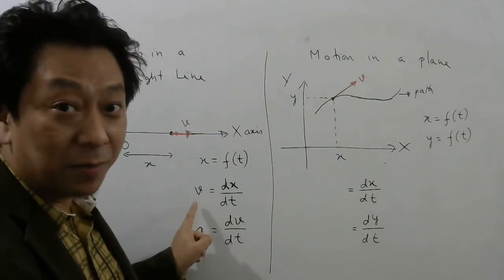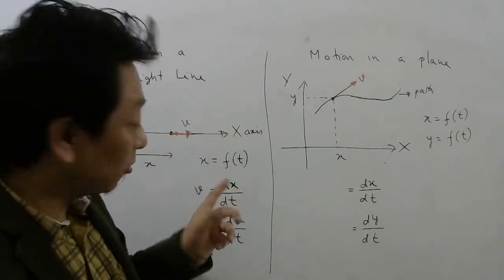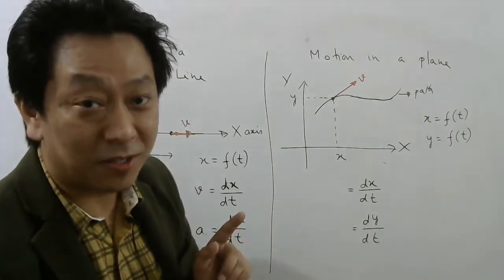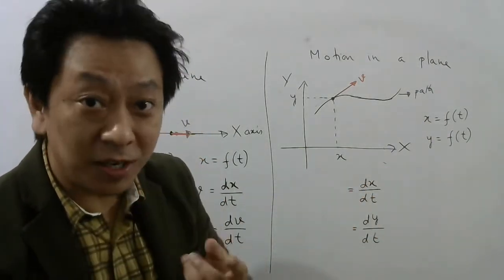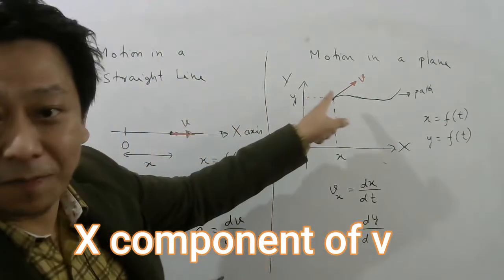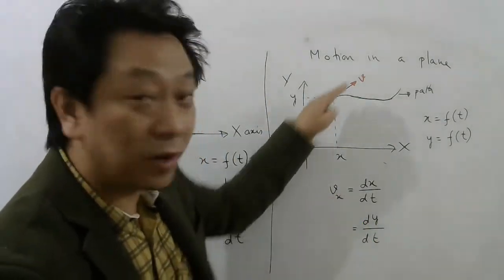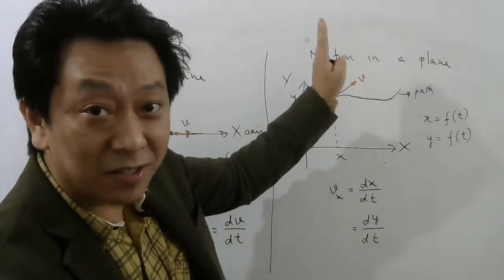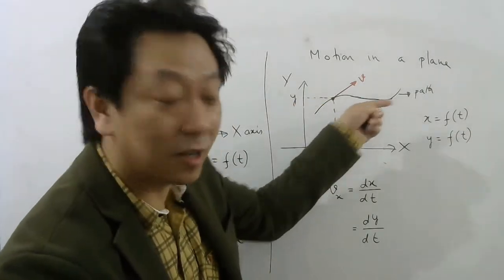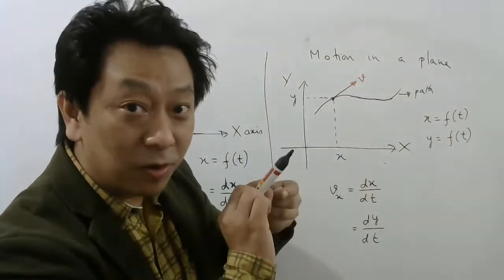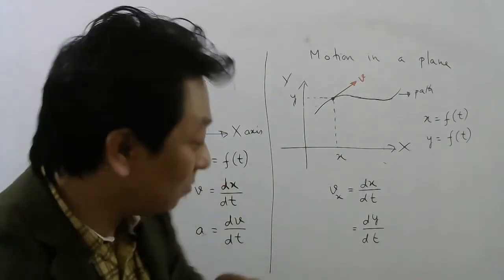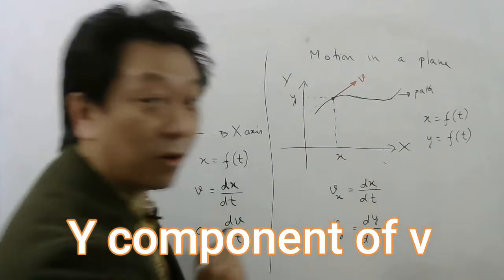Now, dx/dt is velocity along the x-axis when only the x-coordinate changes. But in motion in a plane, the x-coordinate also changes and the y-coordinate also changes. So what is dx/dt? It is only the x-component of the velocity. Similarly, dy/dt — is it the actual velocity? No, dy/dt is the y-component of velocity. Just like dx/dt is velocity along x-axis, this is not the actual velocity. The actual velocity is along the tangent.